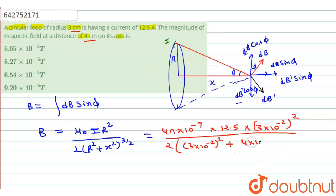it will be equal to 4 into 10 to the power minus 2 raised to the power 2, and whole power 3 by 2.